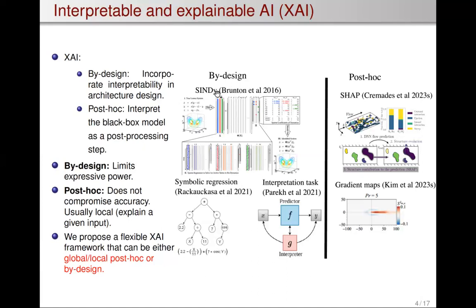Some by-design XAI approaches include SINDy and symbolic regression. You can also incorporate by-design interpretable models within a deep neural network — for example, you can define an interpretation task and penalize for interpretation with a loss function inside the network. Post-hoc approaches are usually based on calculating some sort of gradient using backpropagation to measure sensitivity of output with respect to inputs.